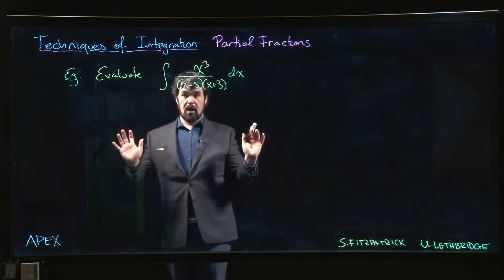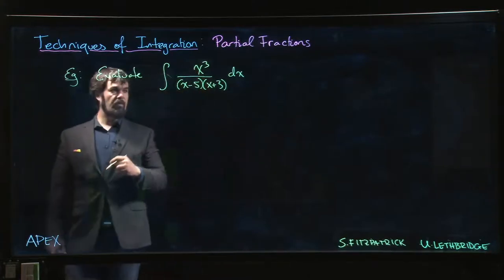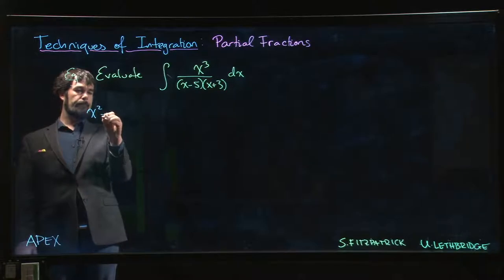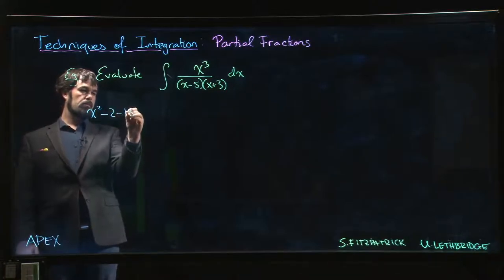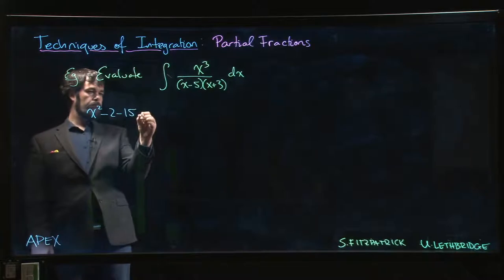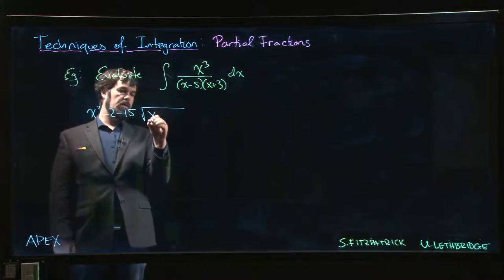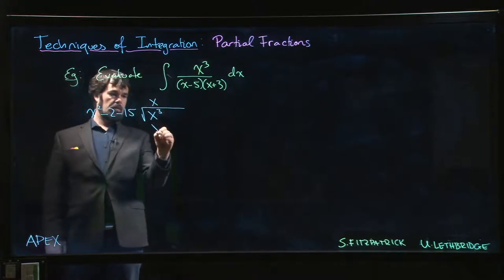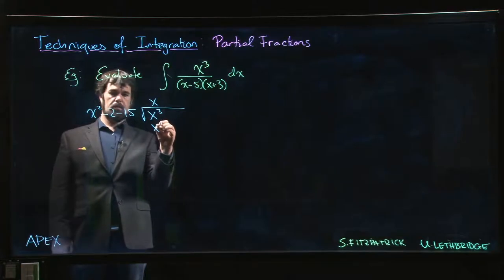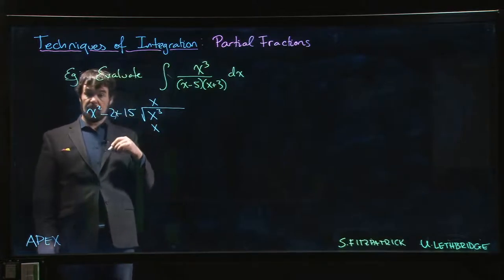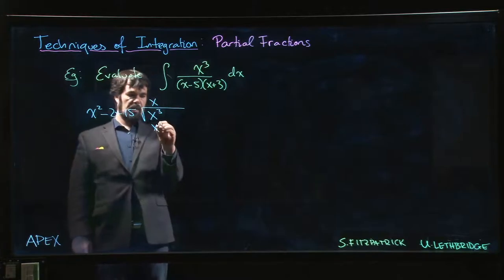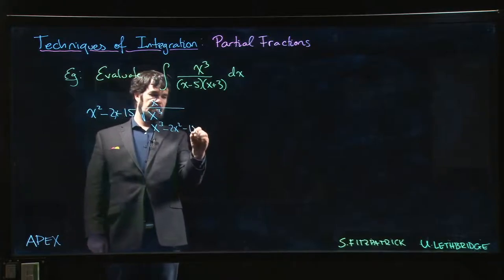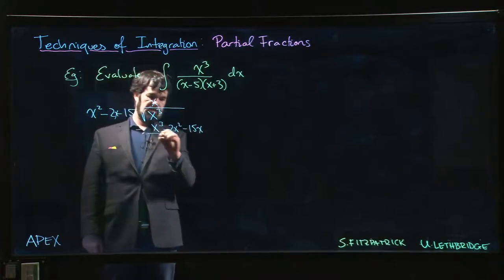So before we begin, we have to do long division. We multiply that all out - that's x squared minus 2x minus 15. We want to divide into x cubed, so you need to multiply by x. We get x times x squared gives me x cubed, x times minus 2x is minus 2x squared, minus 15x, and we have to subtract.